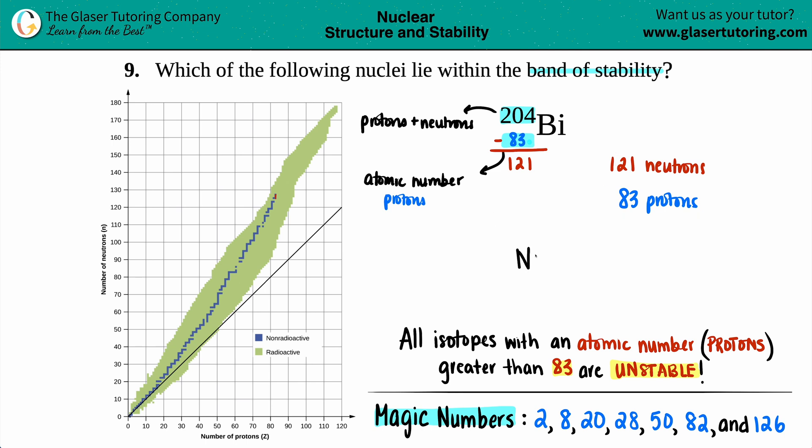So I would say no. And generally speaking, the 204 bismuth isn't as stable as the 209 bismuth, that's the stable one. And if you do look on your periodic table, the average mass for bismuth is 209, not 204. So I would say that this isn't in the band of stability. I hope this helped.